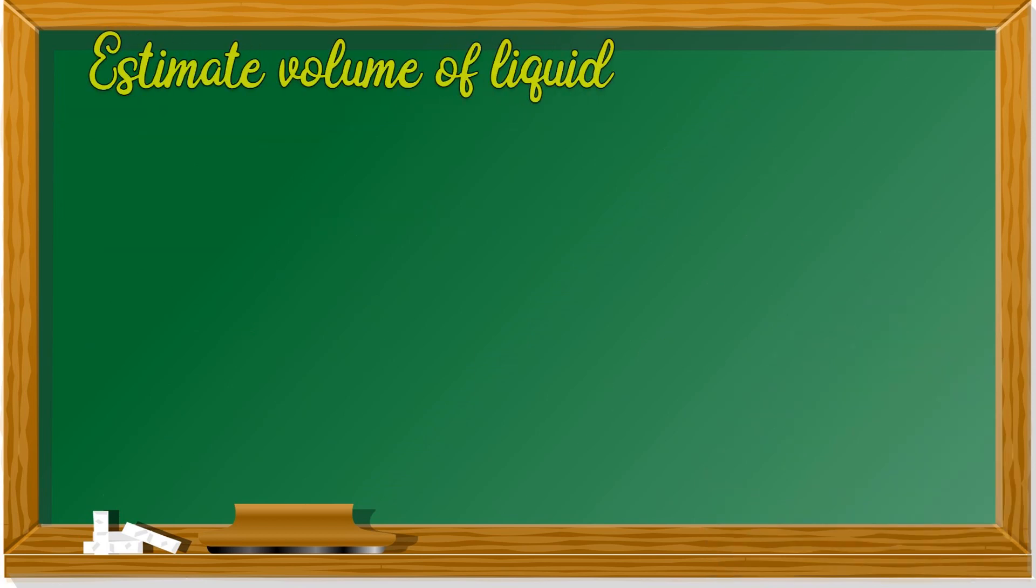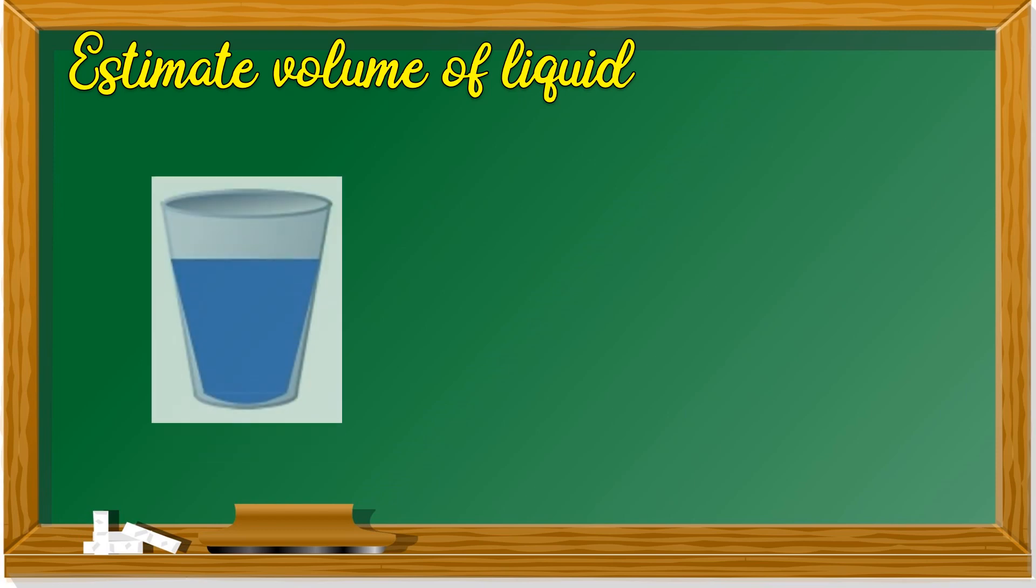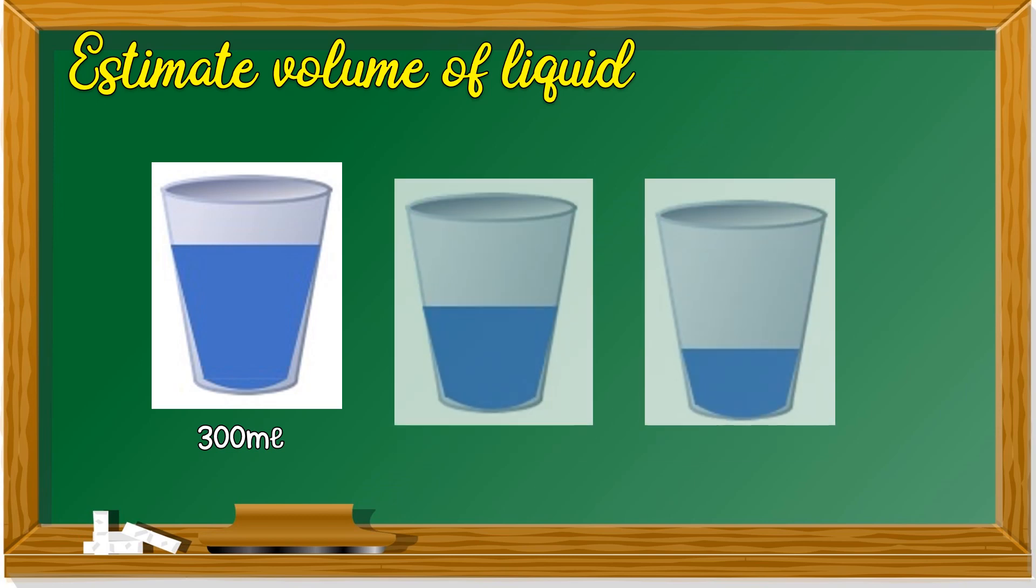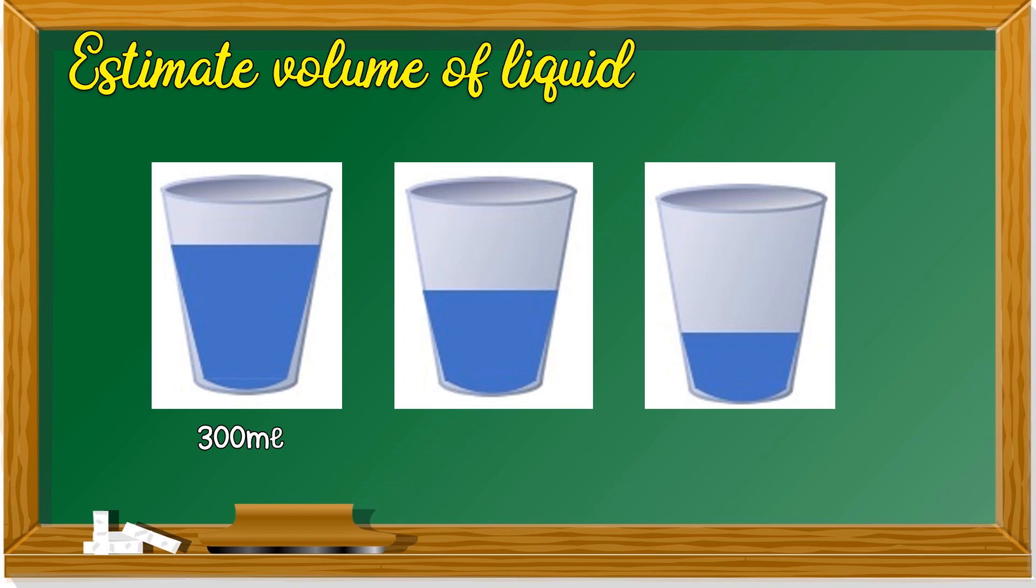Let's estimate volume of liquid. You look at this glass. Let's say the volume is 300 milliliter. If I give you two more glasses with different volume of liquid, can you estimate what's the volume of liquid? Maybe 200 milliliter? The third glass might be about 100 milliliter. That's how you estimate.